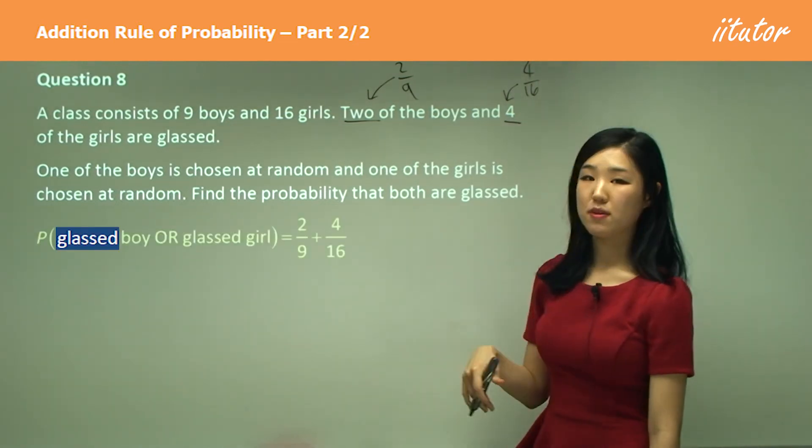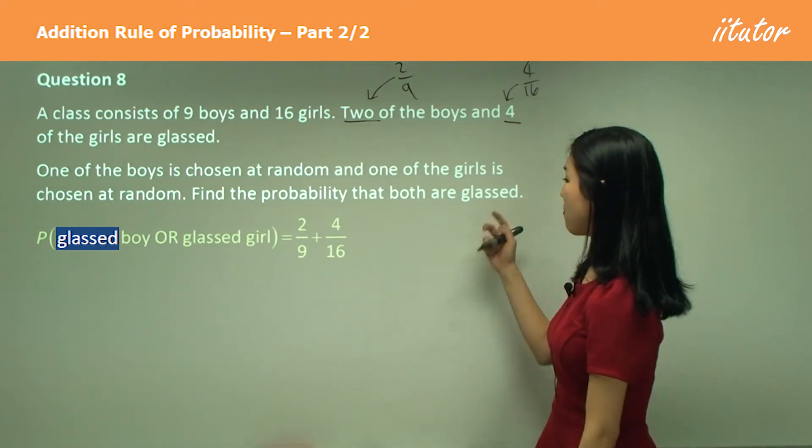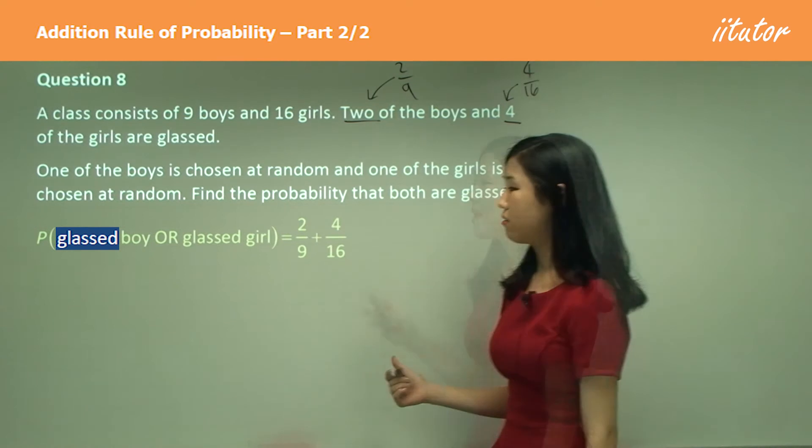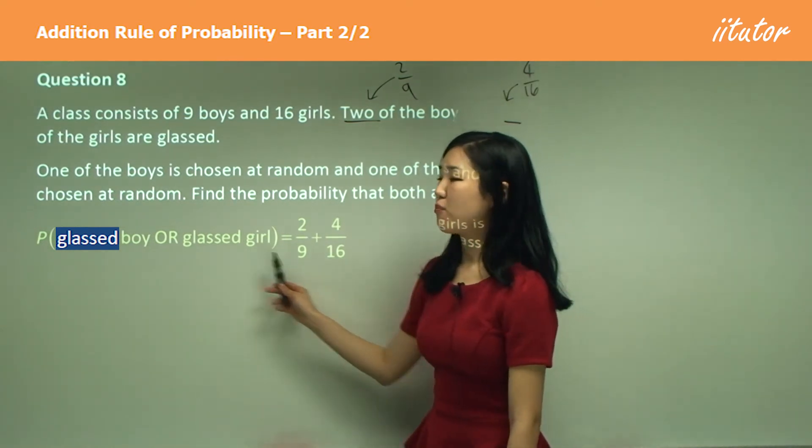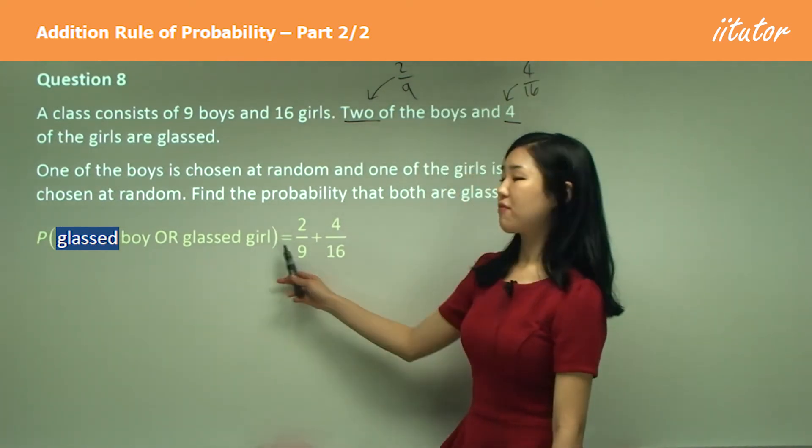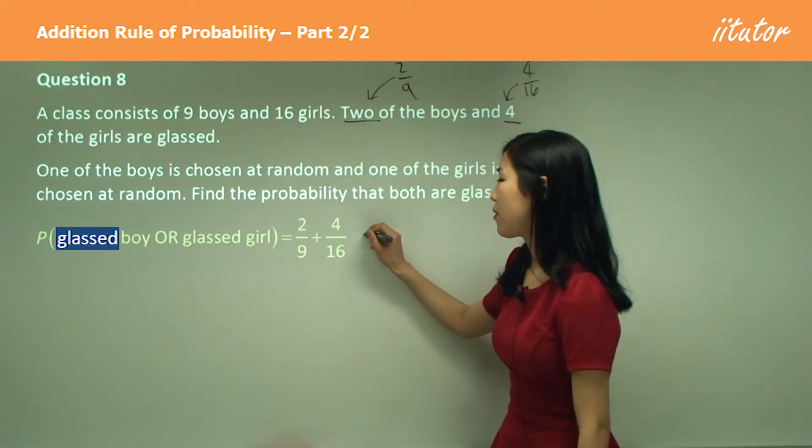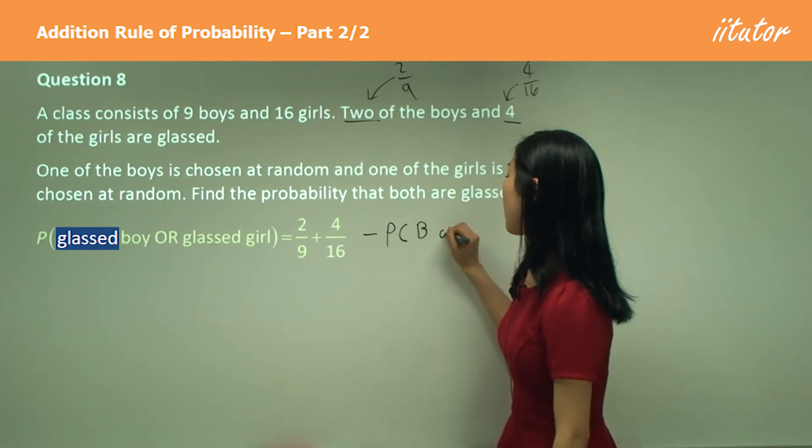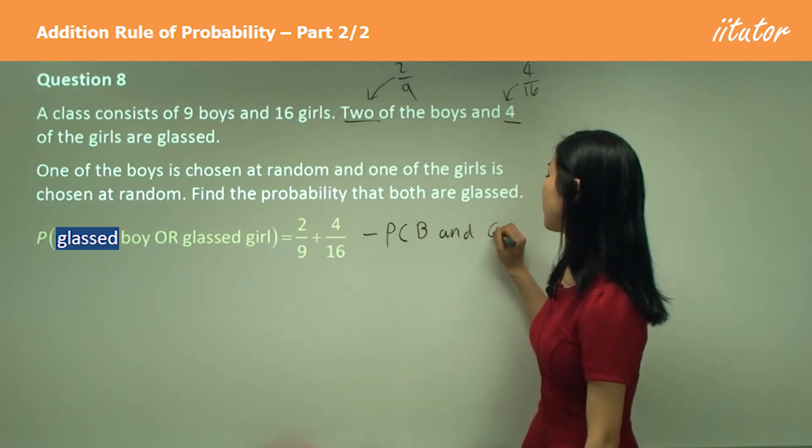So it's going to be something like that because it says both are glassed. The probability of glassed boy or glassed girl, we add the probability of boy plus the probability of girl and then we remember how we subtract the probability of boy and girl both being glassed.